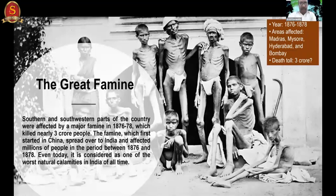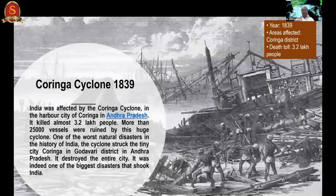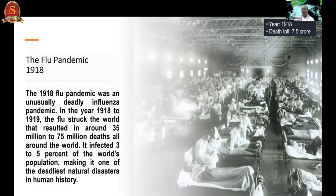The Great Famine of 1876 to 1878 - over two to three continuous years - killed somewhere around 3 crore people worldwide due to lack of food and malnutrition. This is one of the worst disasters in history. The Coringa cyclone of 1839 in Andhra Pradesh killed around 3.2 lakh people and ruined more than 25,000 vessels.